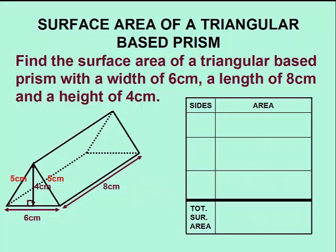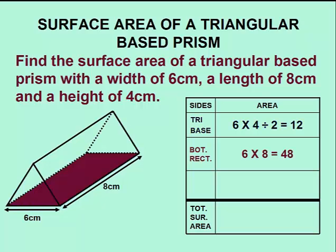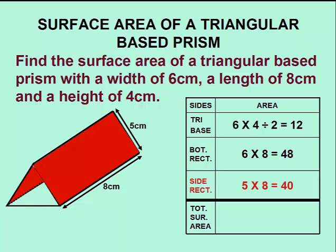Now we can accurately calculate the surface area of this prism. We'll begin with the two triangular bases. The area of a triangle is base times height divided by 2, giving us an area of 12 square centimeters. The bottom of the prism is a rectangle with a width of 6 and a length of 8, giving us an area of 48 square centimeters. The two side rectangles have a width of 5 and a length of 8, giving us an area of 40 square centimeters.